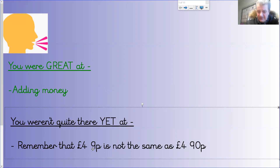One thing worth noting and remembering: four pounds nine pence is not the same as four pounds ninety. We really need to think about our placeholders. Four pounds nine pence - because we haven't got a zero there - means four pounds and nine pence. That is not the same as four pounds and ninety pence.